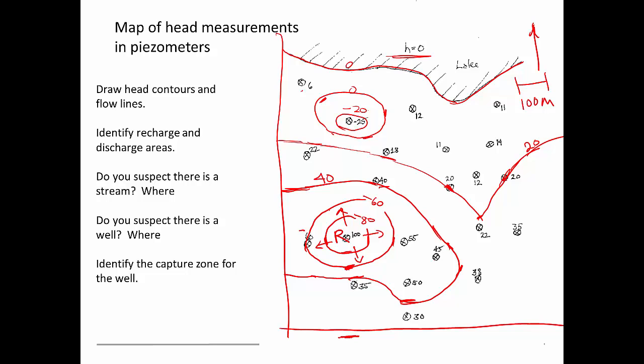And discharge areas. Well, this is a closed contour up right here. So water is flowing like this. And this is a closed contour. This really looks like a well. And so that would be this question here. Do we suspect that there is a well? Yes. And we suspect that it's right there.